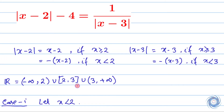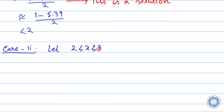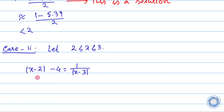Now let us assume that x lies in the interval [2, 3]. Let us write down the given equation. Since x is greater than 2 and less than 3, x - 2 is positive and x - 3 is negative. So from here we have...